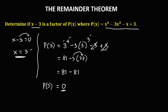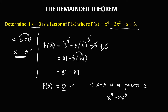So this is the remainder. Since the remainder is equal to 0, therefore x minus 3 is a factor of x to the power 4 minus 3 times x to the power 3 minus x plus 3.